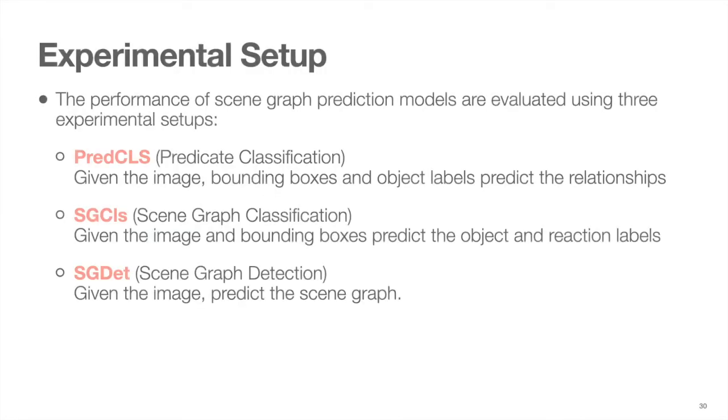We now discuss the experiments conducted in our work. To investigate the performance of scene graph generation models, we use three different tasks. One, predicate classification, where given the image, bounding boxes, and object labels, the goal is to predict the relationships between them.